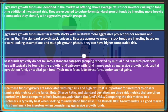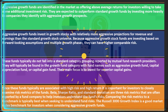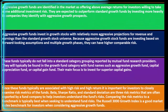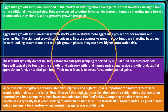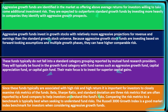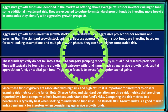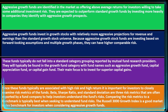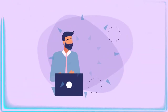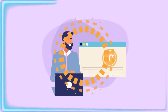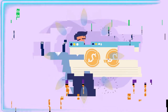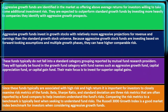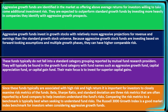Since these funds are typically associated with high risk and high return, it is important for investors to closely examine the risk metrics of the fund: Beta, Sharpe ratio, and standard deviation — three risk metrics often reported by a fund company to help investors understand the fund's risks. Comparing these risk metrics to a benchmark is typically best when seeking to understand fund risks, as they gain meaning through comparison rather than in isolation.